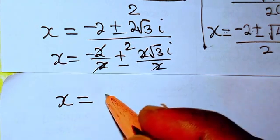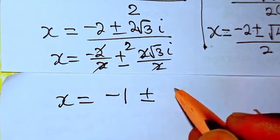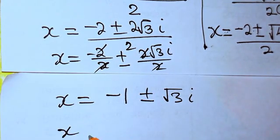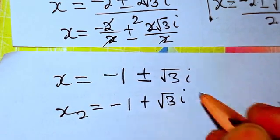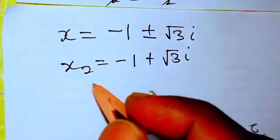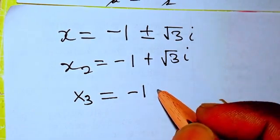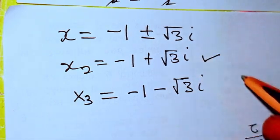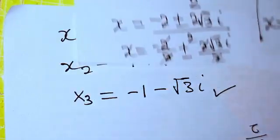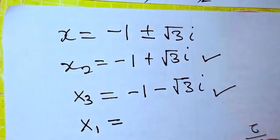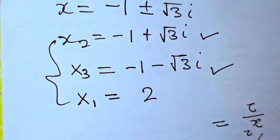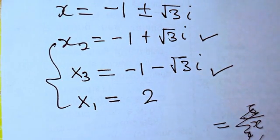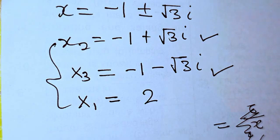So x equals minus 1 plus or minus root 3 i. Therefore we have three solutions: x₁ equals 2, x₂ equals minus 1 plus root 3 i, and x₃ equals minus 1 minus root 3 i. These are the three possible values of x. If you found this class very interesting, do not hesitate to share it with your colleagues and consider subscribing and hitting the bell icon so you are notified when new content is uploaded.